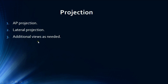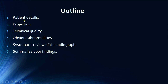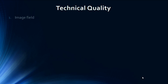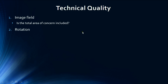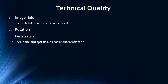We can take additional views as needed. After checking the patient details and projection, we check the technical quality of the radiograph. First, we look at the image field — whether the total area of concern is included. Then we look at rotation; ideally there should be no rotation. Finally, we assess penetration by checking whether bone and soft tissues can be easily differentiated.